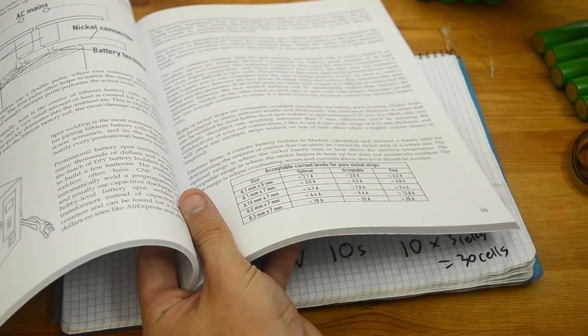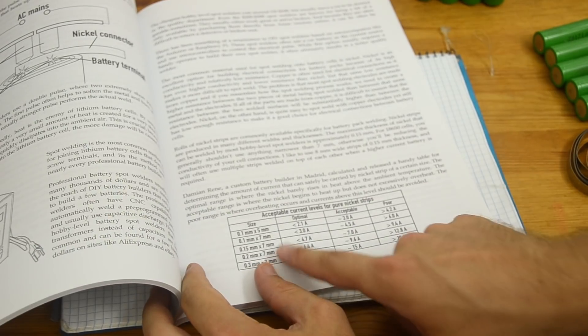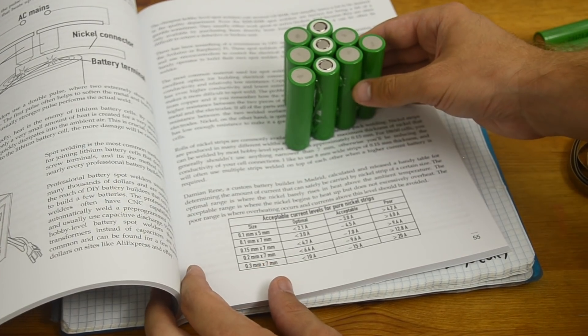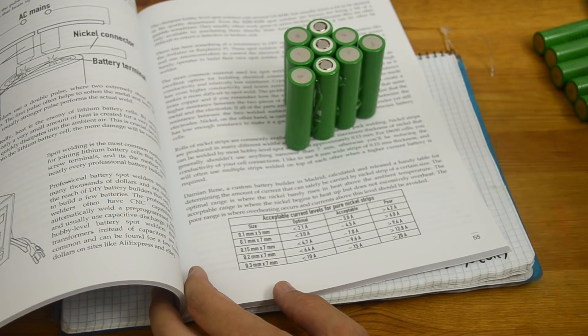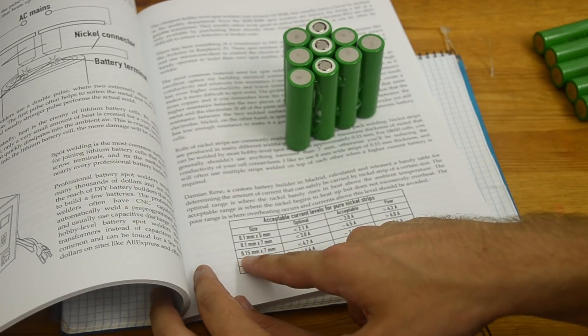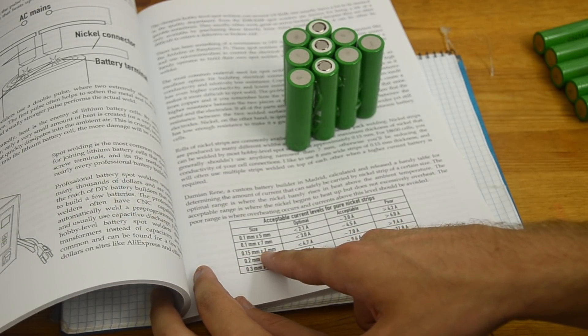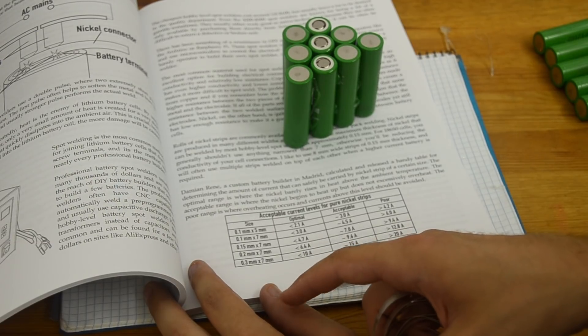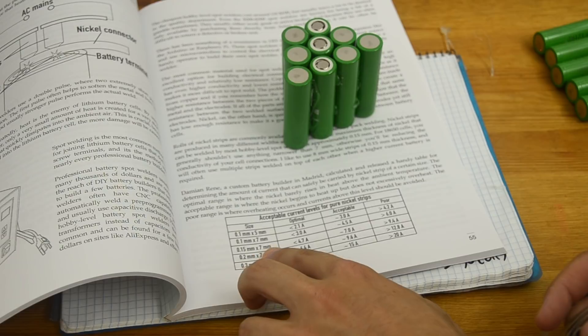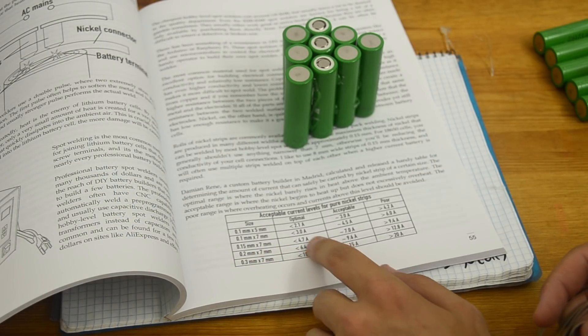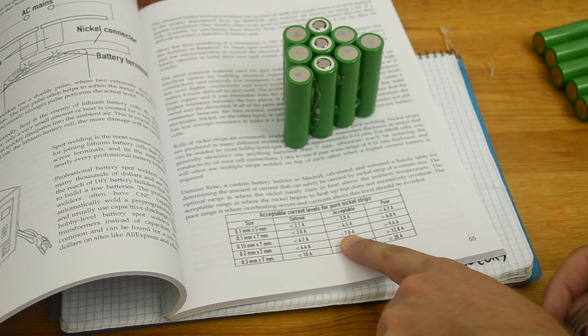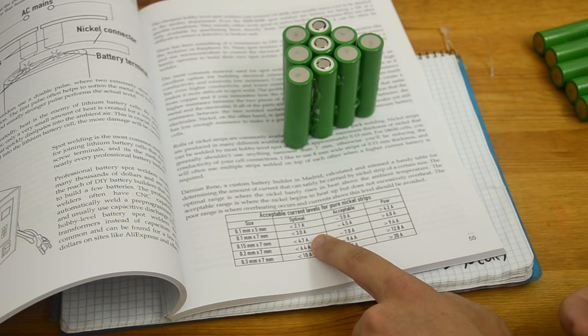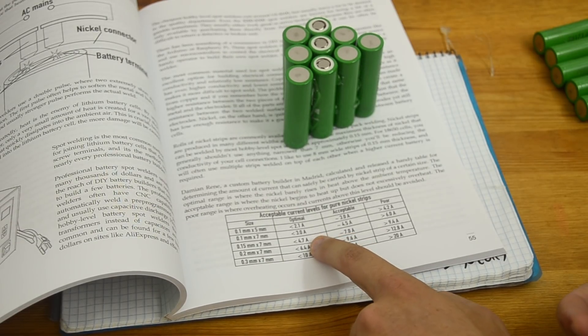Now we need to make sure that we're using enough nickel strip. So we want to check the size of the nickel strip we're using and how much current we need to pass. Now I know from my battery, I'm going to be using it on an e-bike that pulls 15 amps. So I want to make sure that whatever nickel I'm using, it can support 15 amps. So I'm going to be using nickel that's 0.15 millimeters by 7 millimeters. You can find this table on page 55 of my book. It's also on Endless Sphere and you can also just use it right here. So this is the nickel I'm using, 0.15 millimeter by 7 millimeters. What I find is that it can carry an optimal amount of 4.7 amps. It's acceptable to carry up to 7 and on the high end you can go up to about 9.5 amps. But we want to try to keep it down here. So let's aim for about 5 amps because that's just about optimal and it's certainly within the acceptable range.